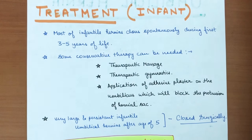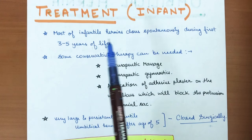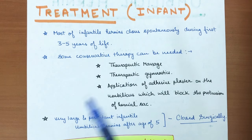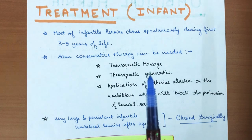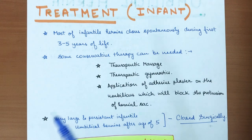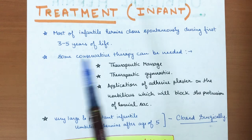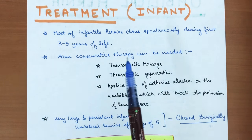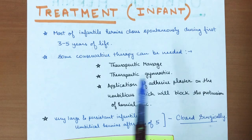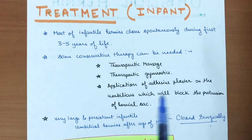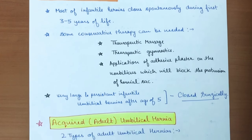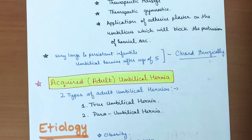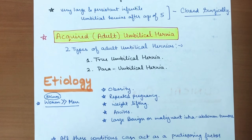Most infantile hernias close spontaneously during the first three to five years of life as the abdominal wall develops. If they do not close, conservative therapy is used: therapeutic massage, therapeutic gymnastics, and application of adhesive plaster over the umbilicus to block protrusion of the hernial sac. Very large and persistent infantile umbilical hernias after age five require surgical closure.